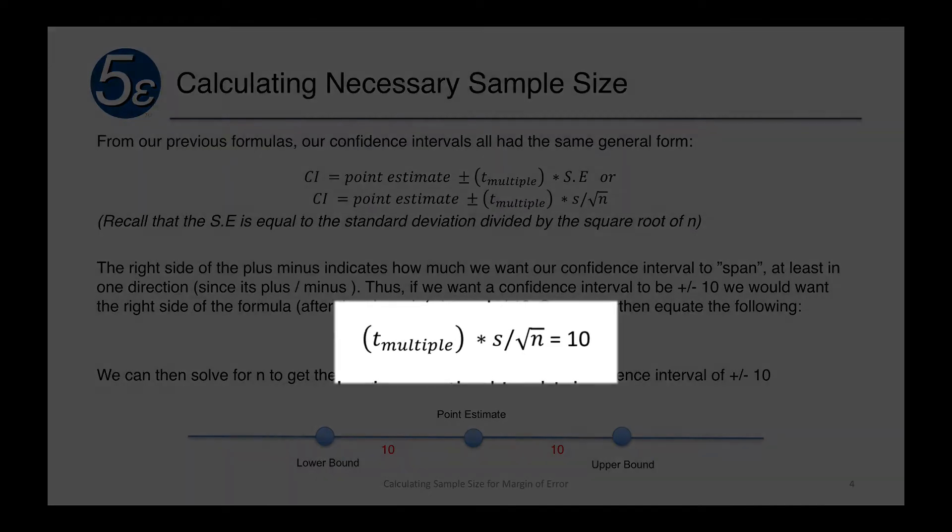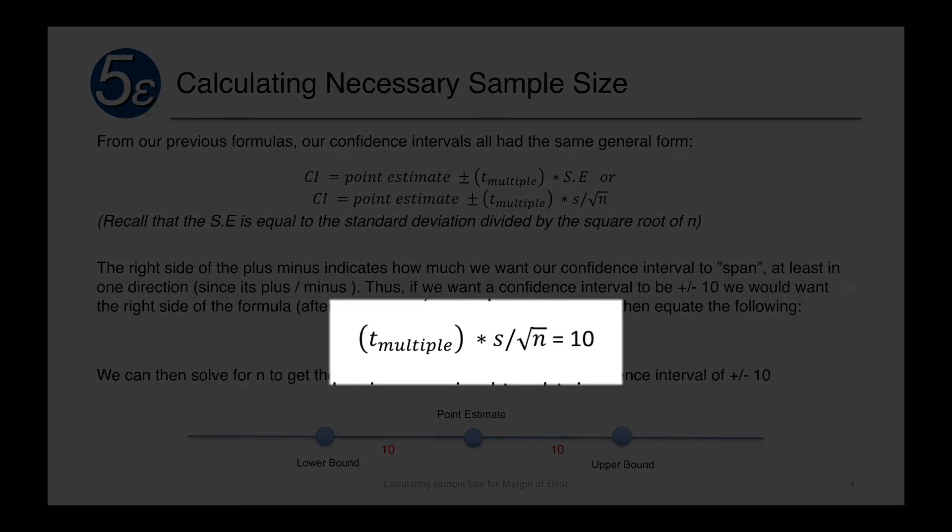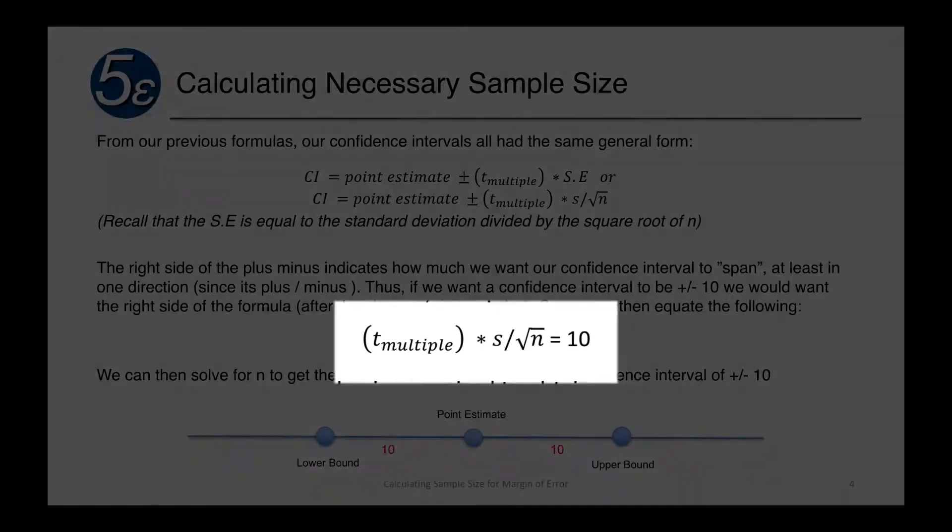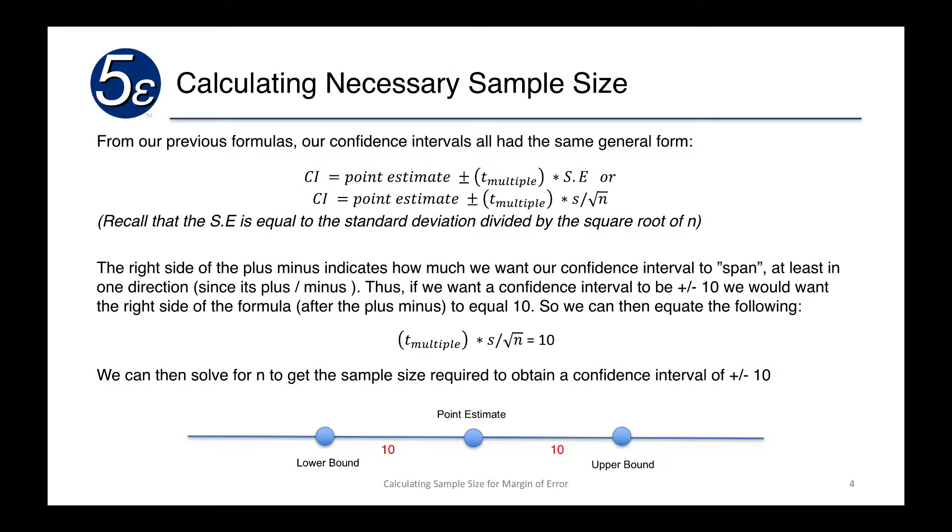T multiple times the standard error, which is denoted here as the sample standard deviation divided by the square root of n equals 10. We can then solve for n to get an appropriate sample size. So this is a way for us to determine how much of a sample we need based on an estimated standard deviation.